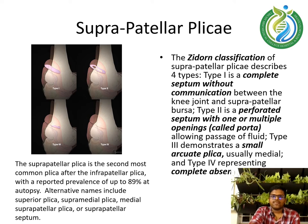The Zidane classification of suprapatellar plicae describes four types. Type 1 is a complete septum without communication between the knee joint and suprapatellar bursa. Type 2 is a perforated septum with one or multiple openings called porta, allowing passage of fluid. Type 3 demonstrates a small arcuate plica, usually medial, and type 4 represents complete absence of plica.